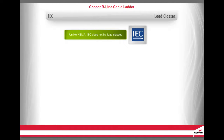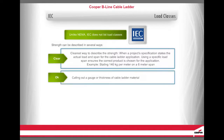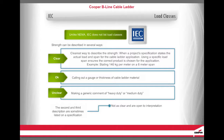Unlike NEMA, IEC does not list load classes. In the IEC specifications, the strength can be described in several ways. First, the clearest way is when the project specification states the actual load and span for the cable ladder application — for example, stating 140 kilograms per meter on a 6-meter span. Second, calling out a gauge or thickness of the cable ladder material. Third, making a generic comment such as heavy-duty or medium-duty, which is unclear and open to interpretation. In this situation, it would be best to contact the project specifier to gain additional information.